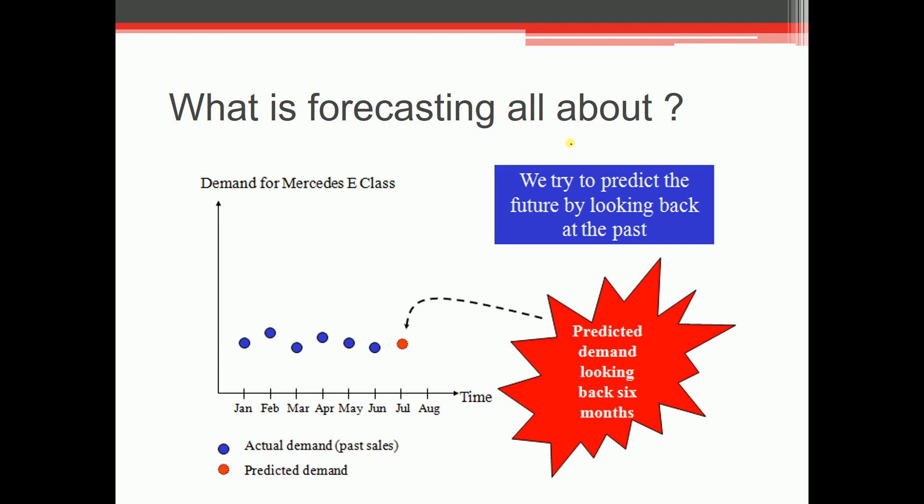So what is forecasting all about? Let's say we have taken one example of the demand of Mercedes E-Class and we are trying to predict the future by looking back at the past. So we are taking some previous data. In the month of January this much was the demand, then in February this was the demand and then March, April, May, June and so on. These were the future demands.